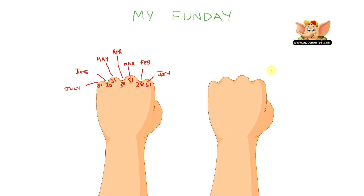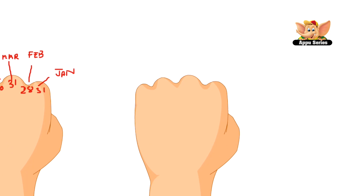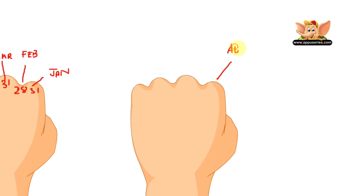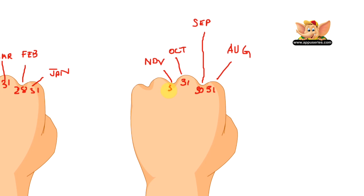Let me bring in another image of a fist so you get a better understanding. You need to go back to the first knuckle of your fist — we just ended at July. So after July it's August, and the first knuckle — all the knuckles — are 31 days, so August is 31 days. The next gap is September — 30 days. The next knuckle is October — 31 days. Then November — 30 days. And after November is the last month of the year, December, which has 31 days.